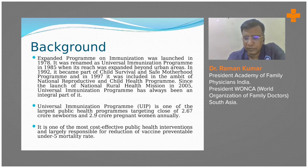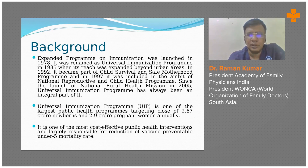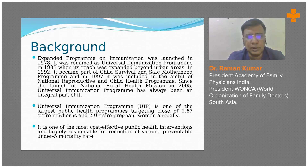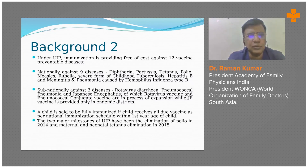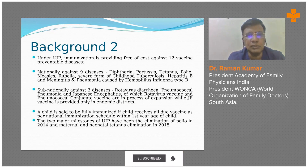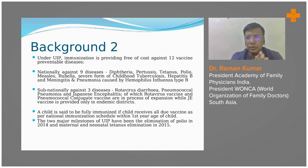The government gives a lot of emphasis, and over a period of decades, parents and the community have become aware about vaccines. Under the Universal Immunization Program, immunization is provided free of cost against 12 vaccine-preventable diseases. Remembering this number is important — 12 vaccine-preventable diseases.